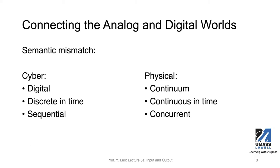As we mentioned earlier, a cyber-physical system is to connect the cyber world with the physical world. A lot of the time, especially in the physical world, you don't have everything in digital signal format. Many physical systems are continuous, as opposed to the digital values we see in cyber systems. Also, physical processes are continuous in time, whereas in a computing domain we use discrete events or signals in time.